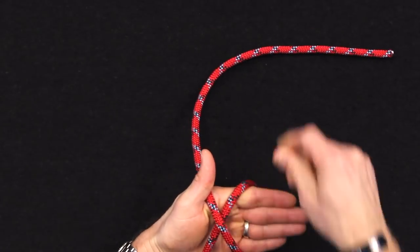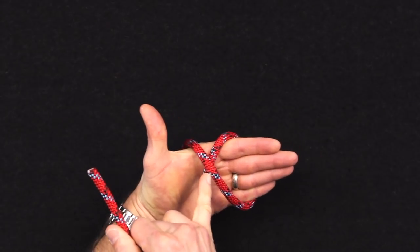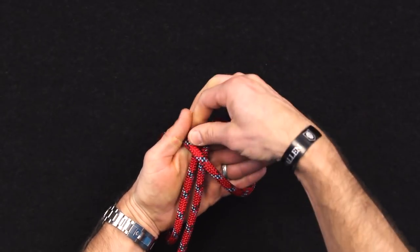So you kind of make an X right here, and then you come around the back side again, and where you just crossed making the X, you are going to come back in this way.